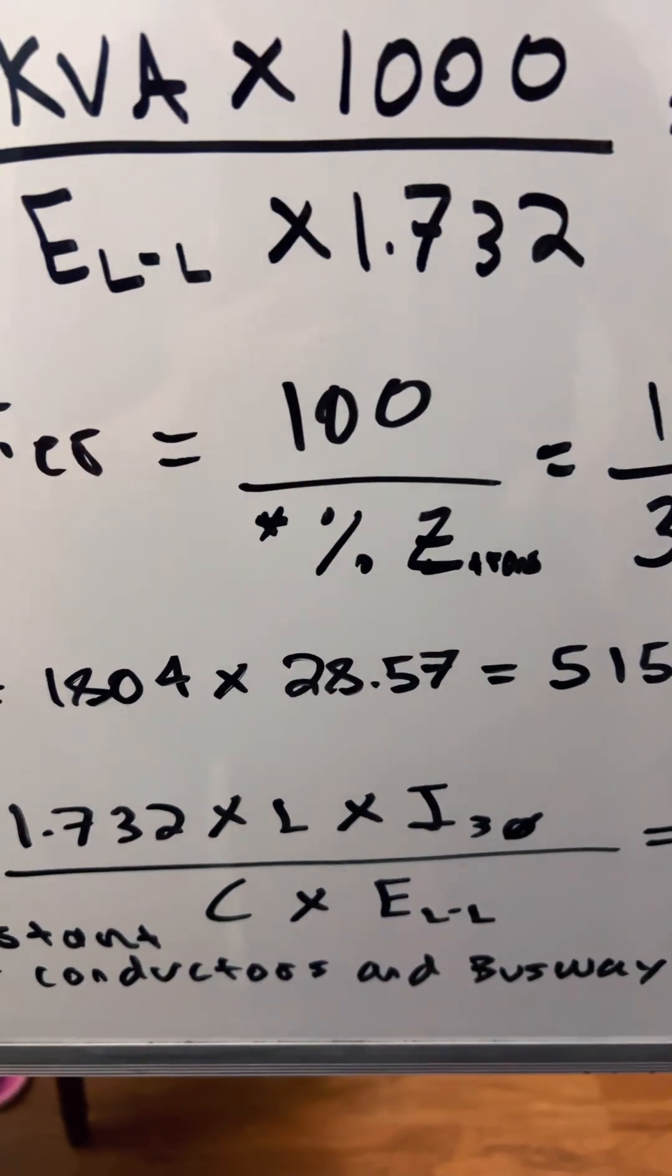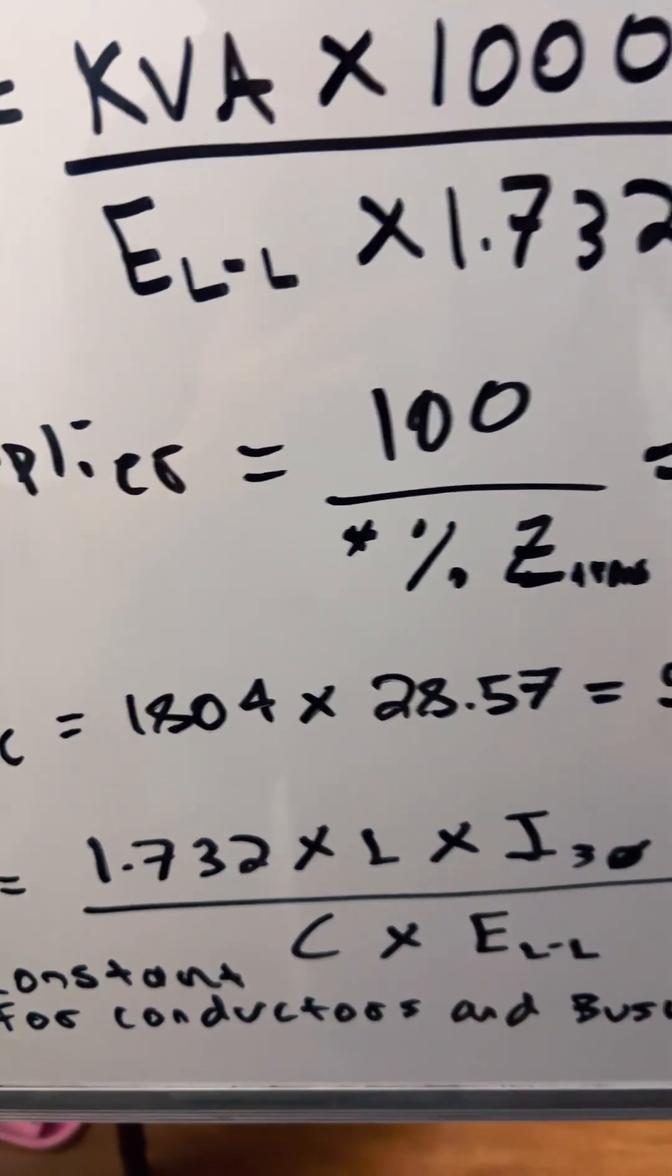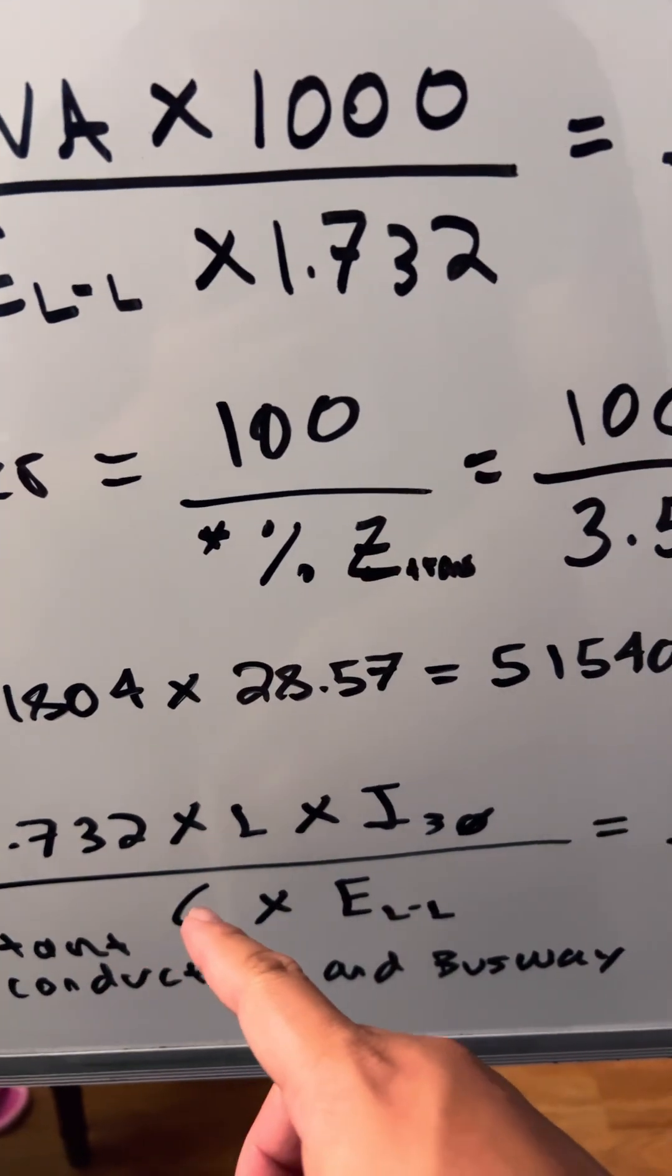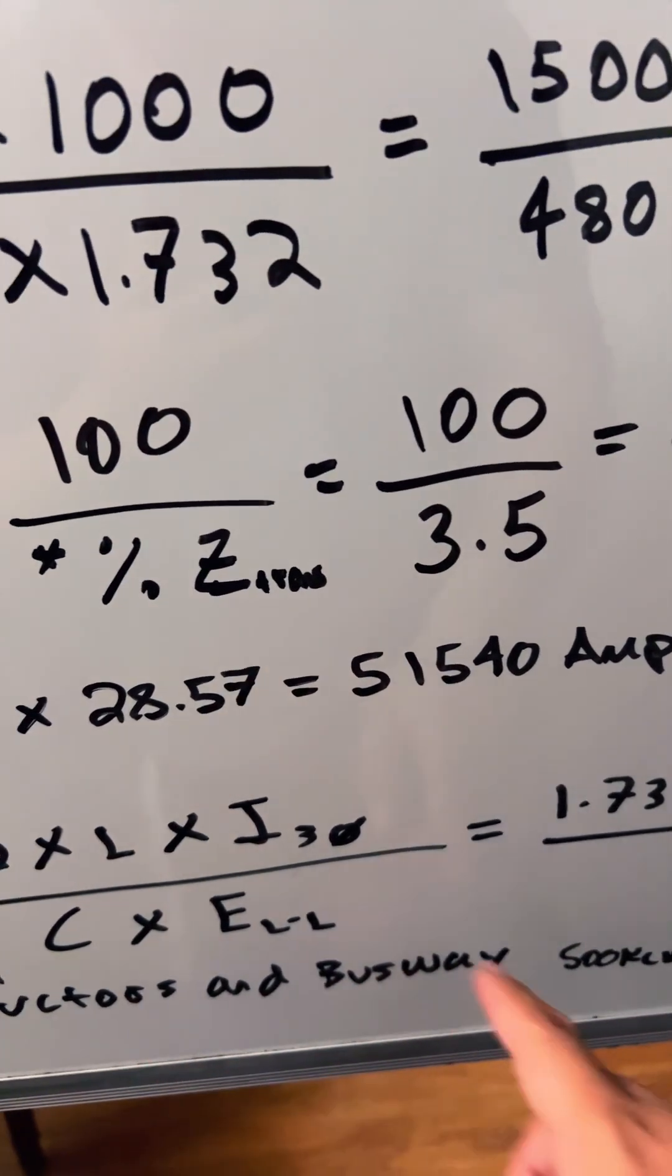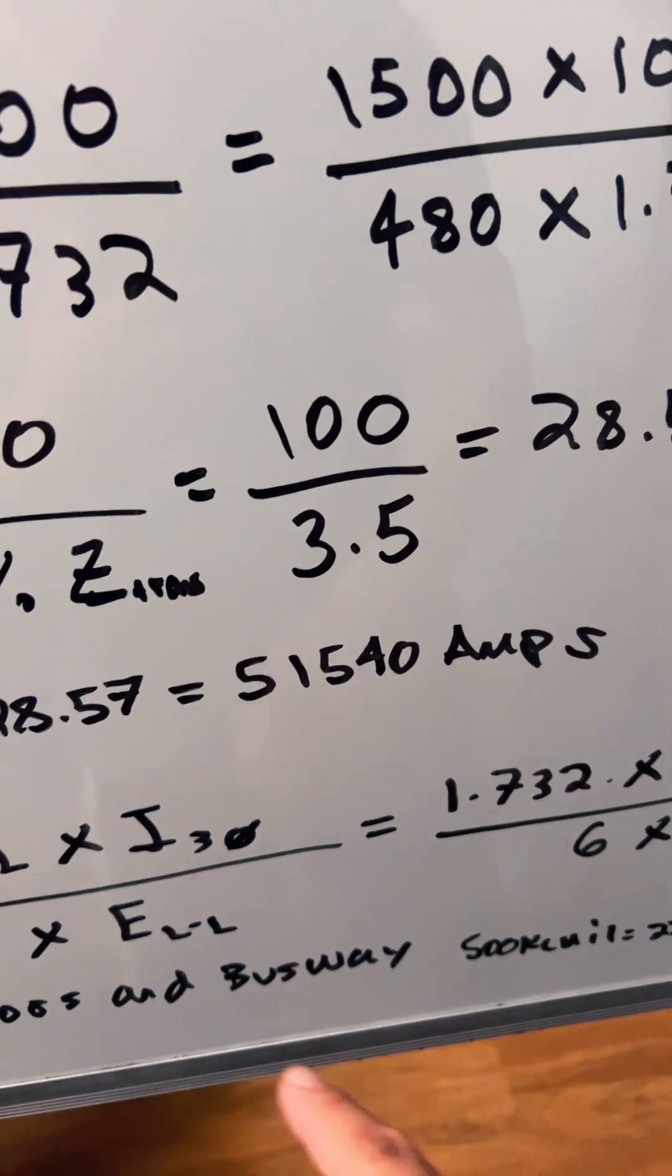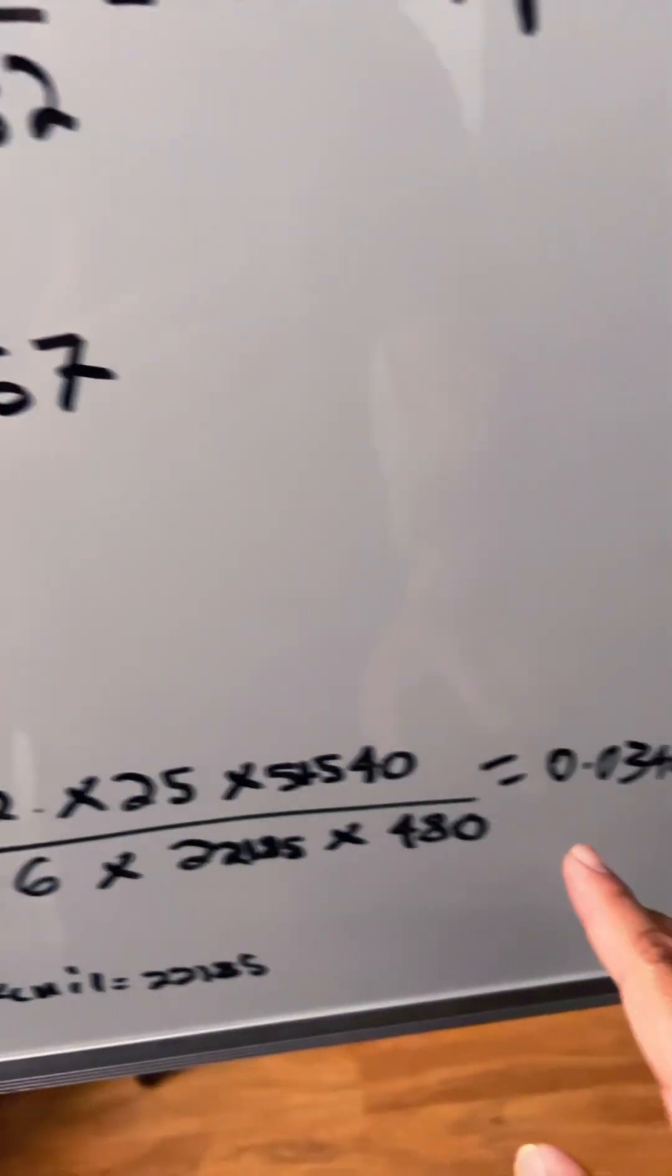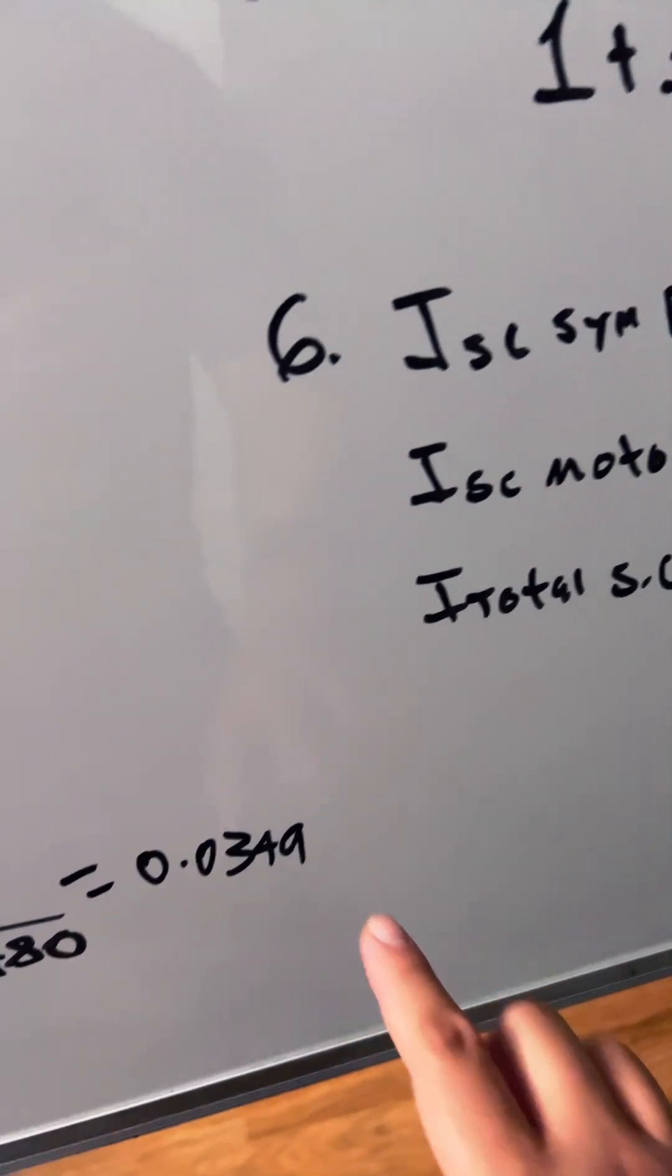Then we find the factor, which equals 1.732 times L (the length) times the three-phase current, divided by C (the constant for conductors and busway) times the line-to-line voltage. Plugging in the numbers gives us 0.0349.